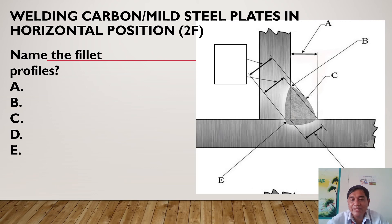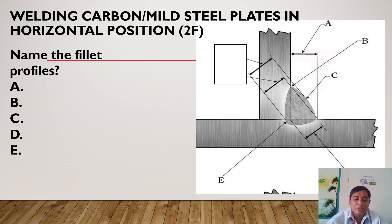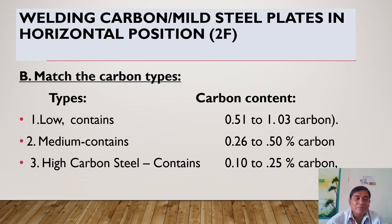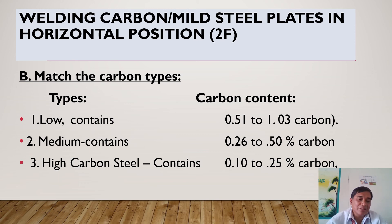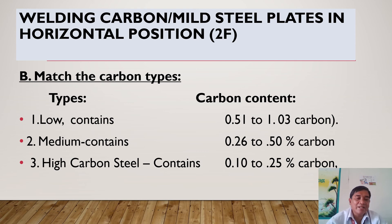Let's have a little review activity. Name the fillet weld profiles. Letter A is the weld leg; letter B is the weld toe; letter C is the weld face; letter D is the throat; and letter E is the weld root. Now match the carbon types: low carbon steel is 0.1 to 0.25% carbon; medium carbon steel is 0.26 to 0.5% carbon; and high carbon steel is 0.51 to 1.03% carbon.